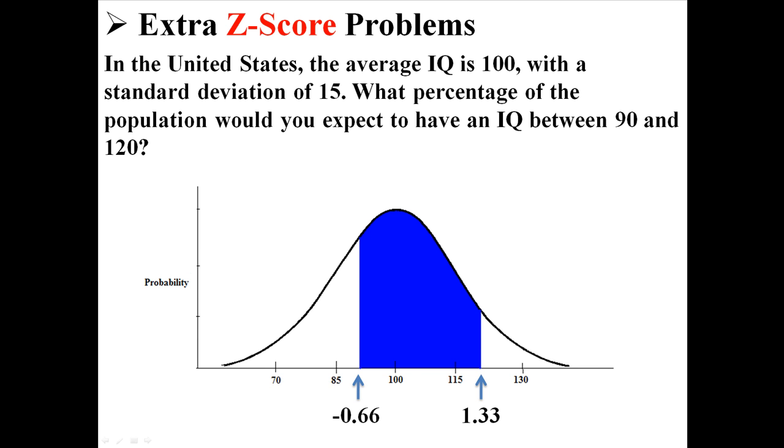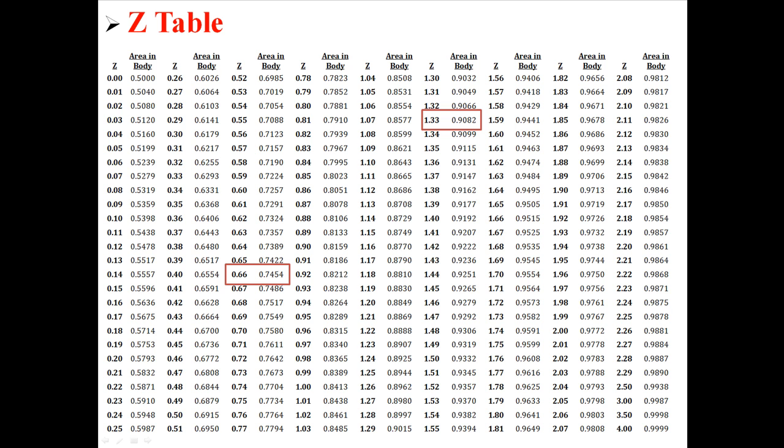So now that we know those two z-scores, we can look them up in the table. So for the z-score of 0.66, we get an area in the body of 0.754. And for the z-score of 1.33, we get the area in the body of 0.9082. So that's about 75% and 91%. Well, we know that that is the area in the body.